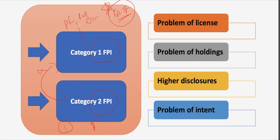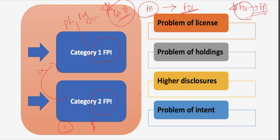Recently, any entity or individual who invested as FPI but holds more than 10 percent of the holdings will be directly considered as FDI. And an entity who invested as FDI but holds less than 10 percent of the holding will now be considered as FPI. Now let's brainstorm — if an FDI investor holding less than 10 percent is reclassified as FPI, what problems arise?